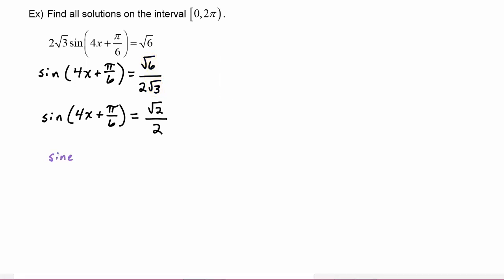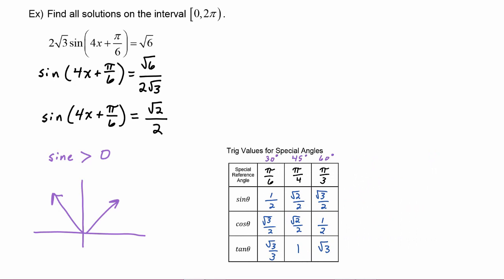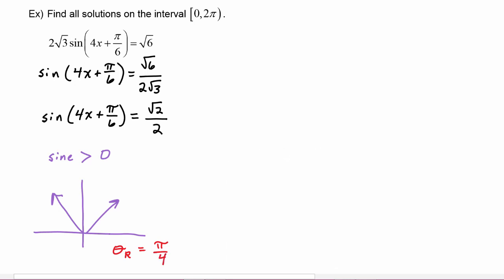We know that when the sine function is positive, our angles have to be in quadrants one and two. Looking at our special angle chart in the sine row for radical two over two, we see that our reference angle is going to be pi over four. Putting that reference angle in quadrant one gives pi over four; putting it in quadrant two means we compute pi minus pi over four, which gives three pi over four.